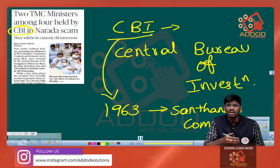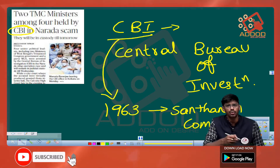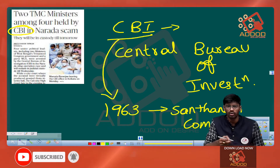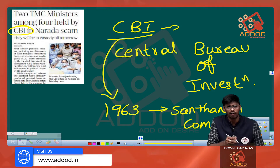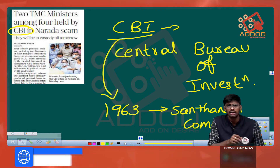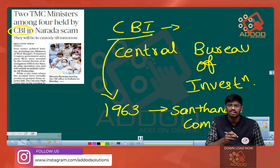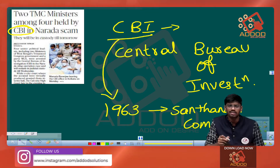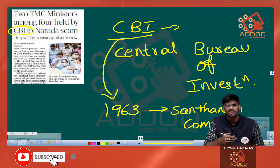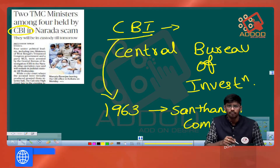So if the CBI wants to take up a new investigation in West Bengal, it has to take permission from the West Bengal government. However, they did not ask West Bengal's permission when they were investigating two ministers. The government of West Bengal is stating that the CBI is not following the rules set by the Acts and the Constitution. This is the issue with respect to the CBI.